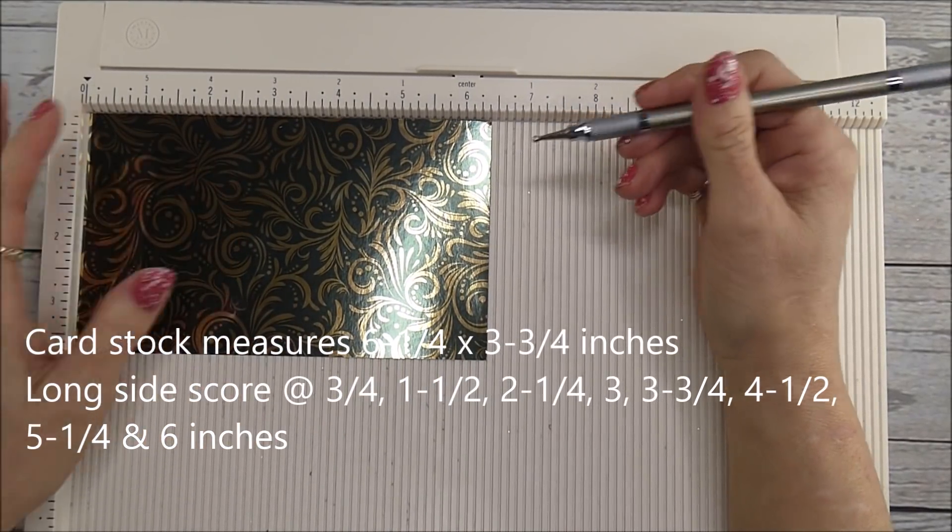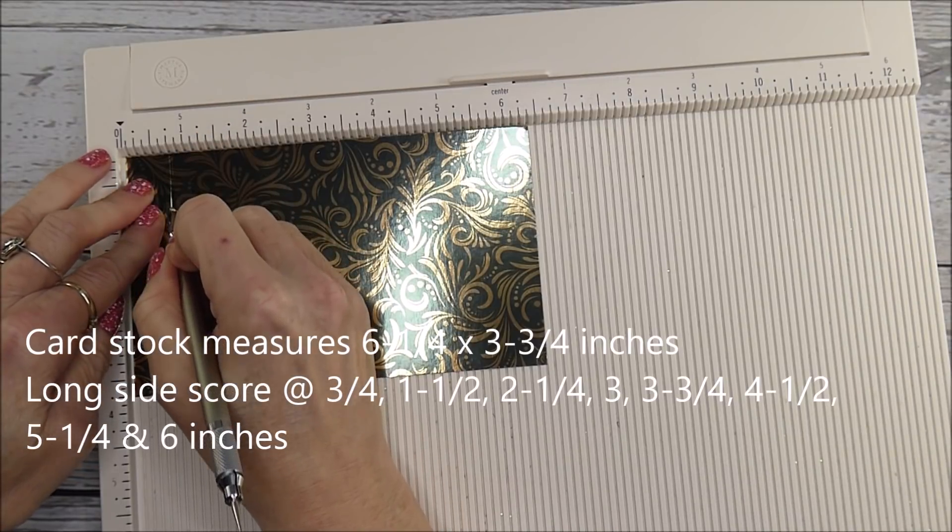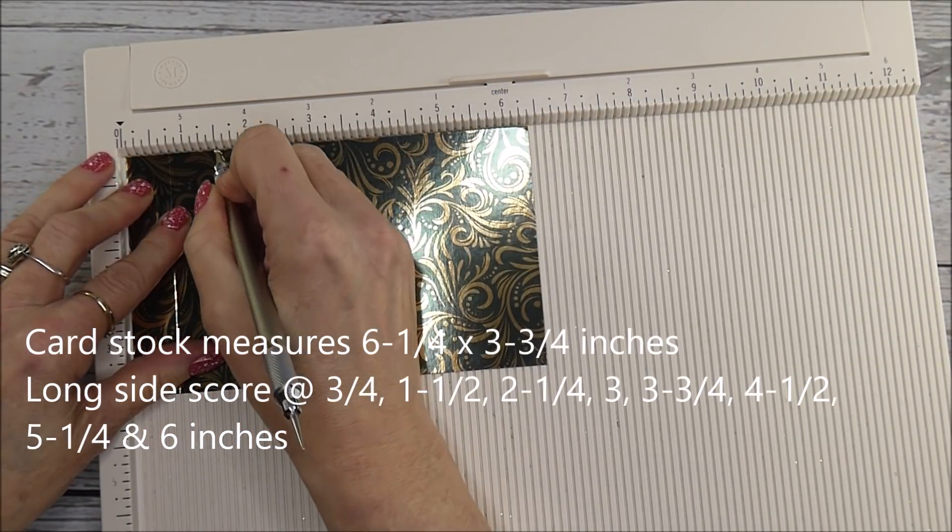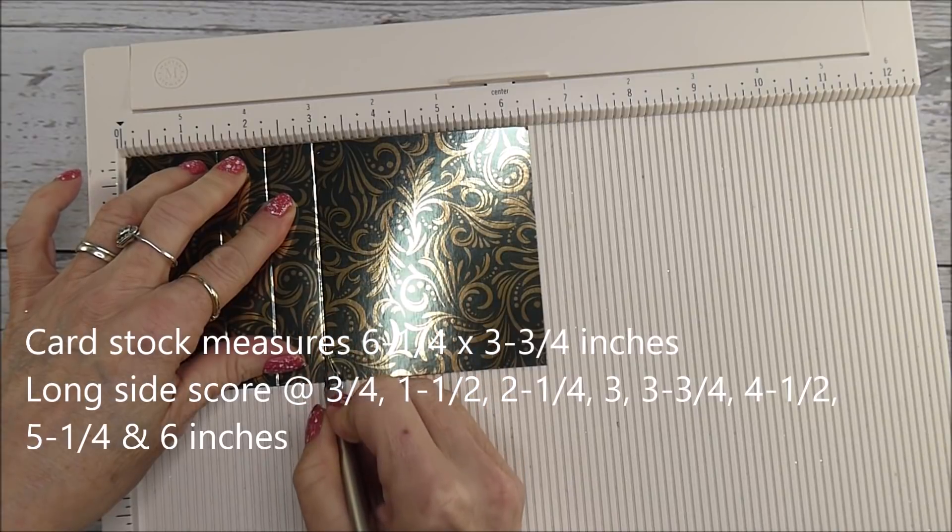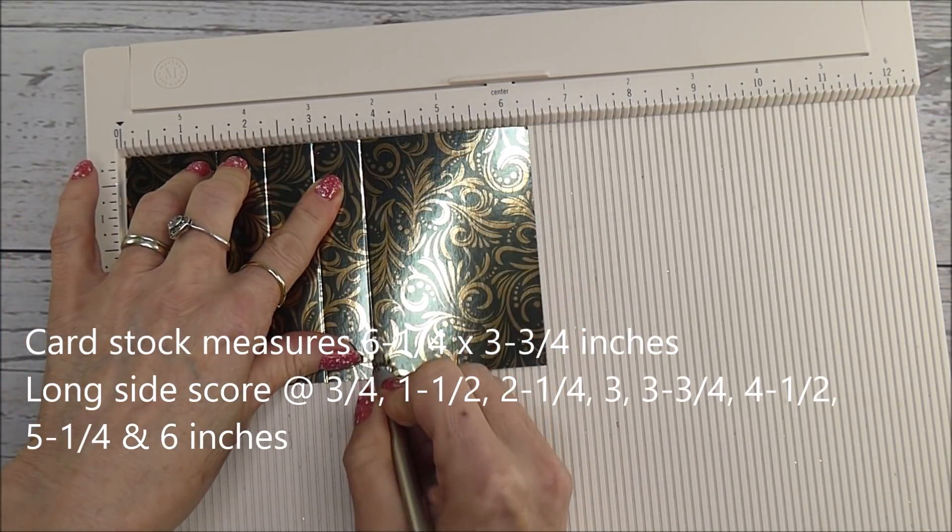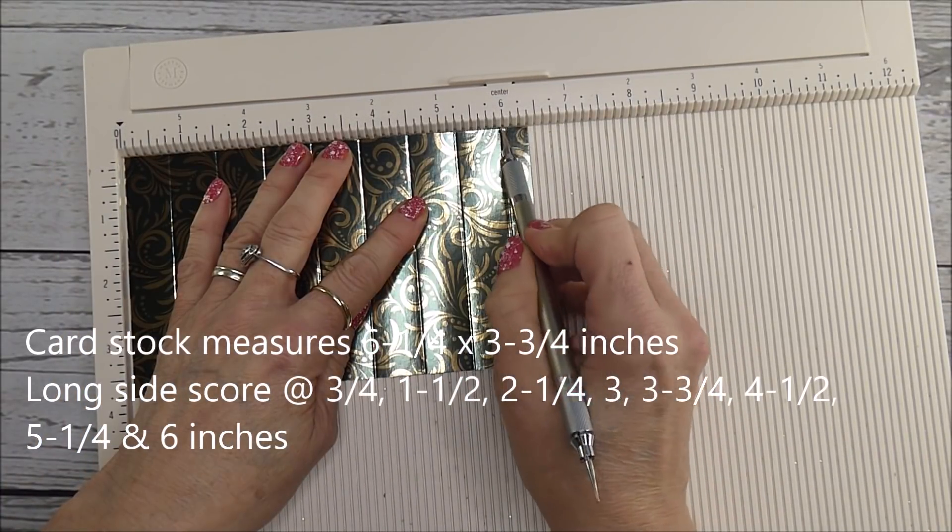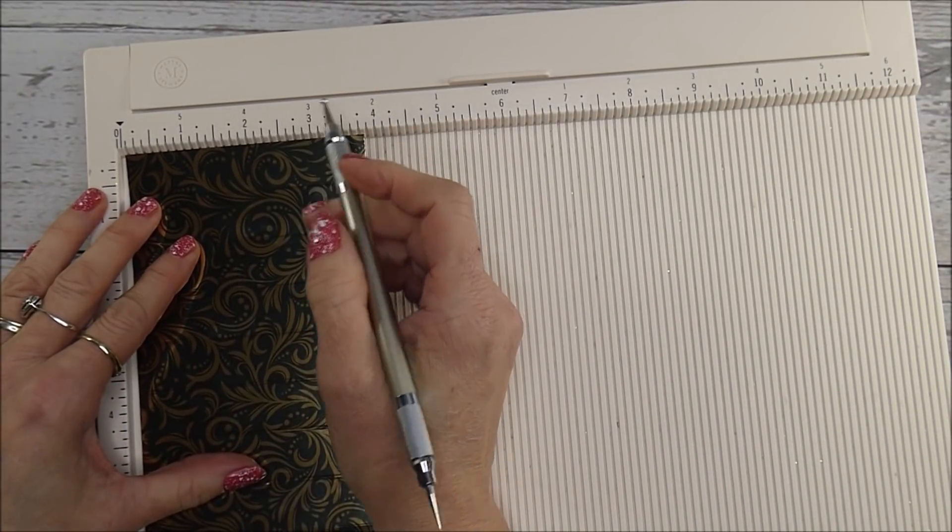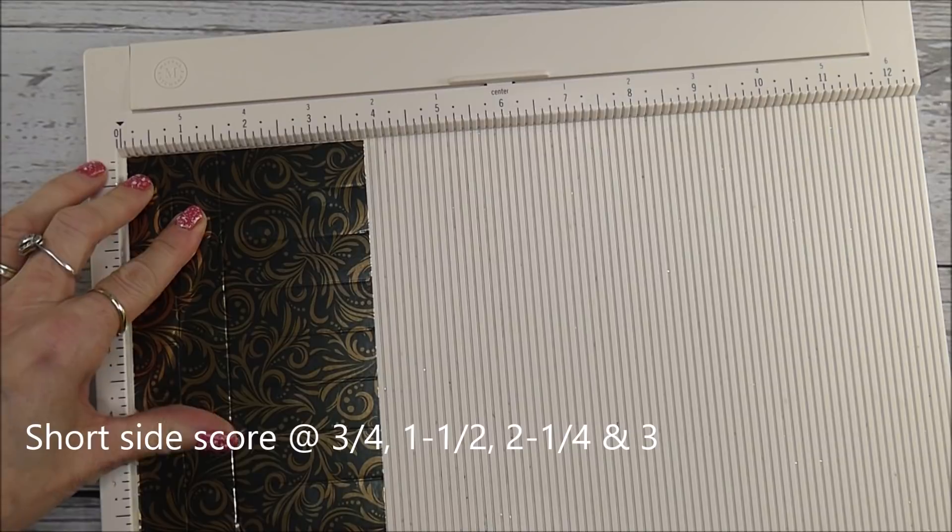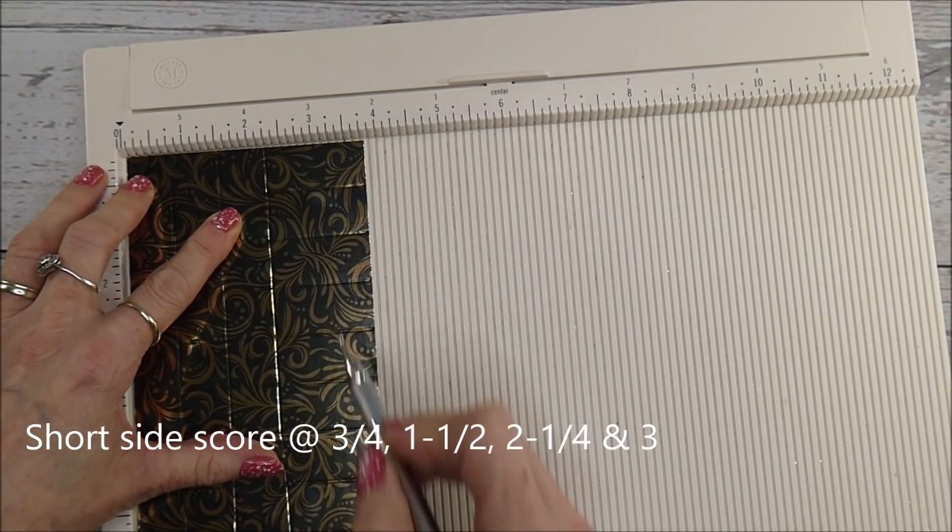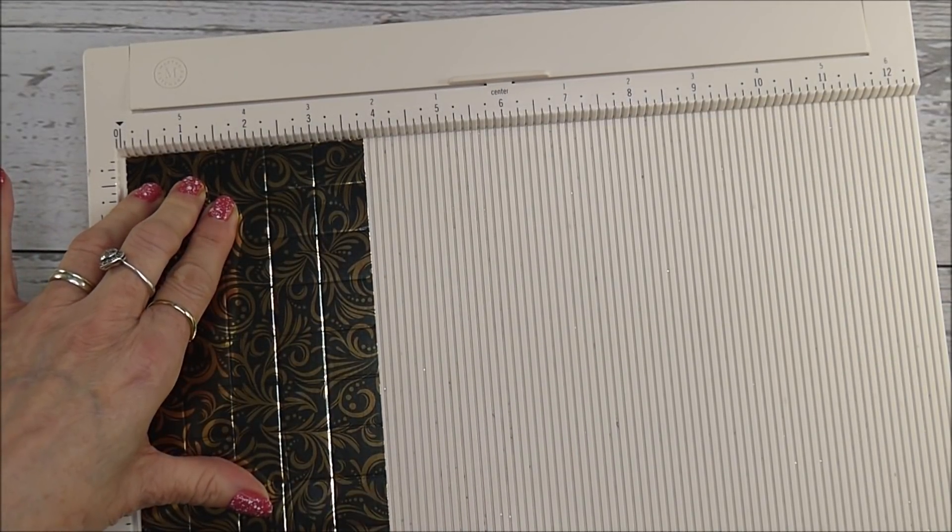This piece of Miri pad paper or Miri card measures six and a quarter inches by three and three quarters. So I'm going to start by scoring on the long side. So your very first score needs to be at three quarters of an inch. Then you're scoring one and a half inches, two and a quarter, three, three and three quarters, four and a half, five and a quarter and six. And then on the short side, you're going to score at three quarters, one and a half, two and a quarter and at three.